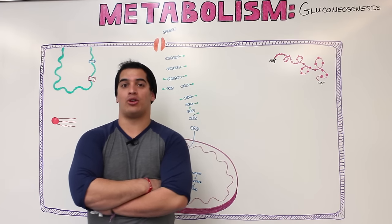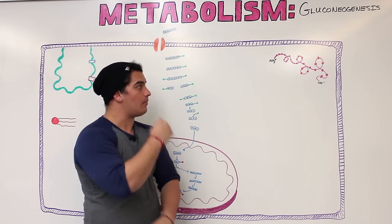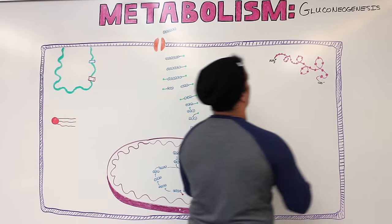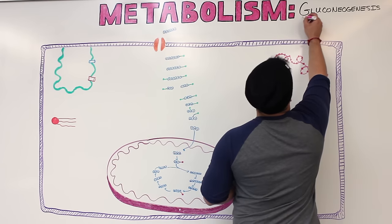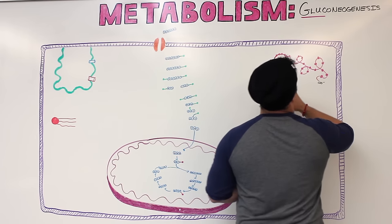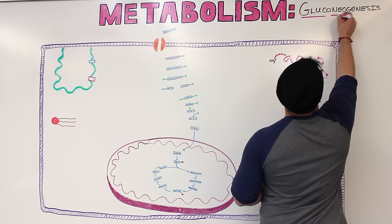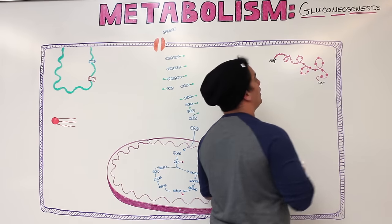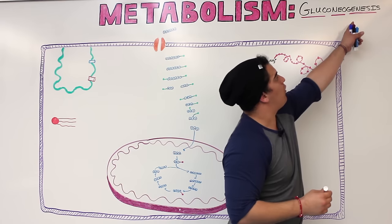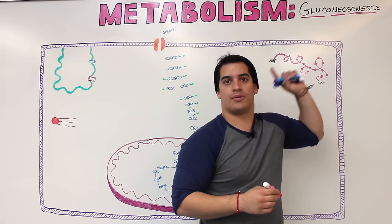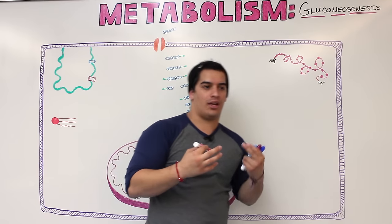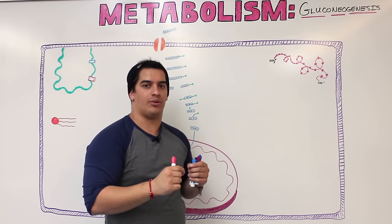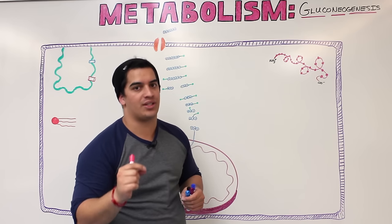Alright Ninja Nerds, in this video we're going to talk about gluconeogenesis. Let's decipher this word: gluco means glucose, neo means new, and genesis means to form. So we are forming new glucose — specifically, forming new glucose molecules from non-carbohydrate sources.